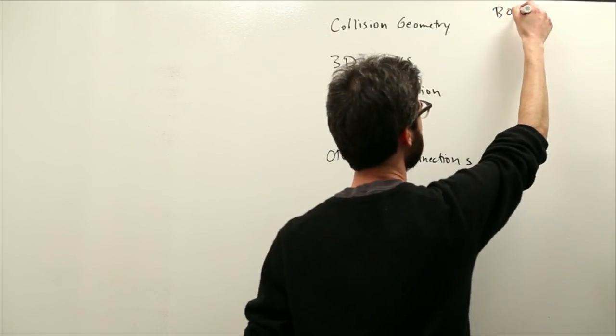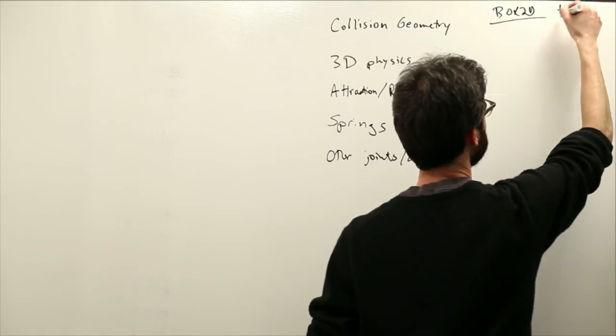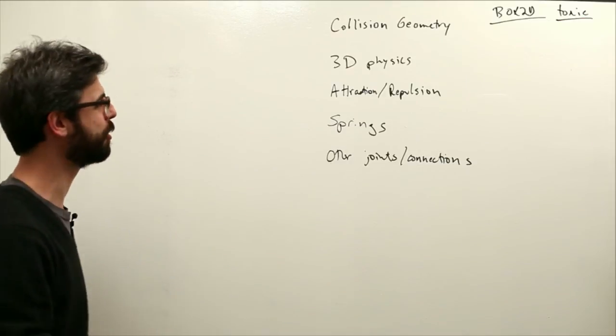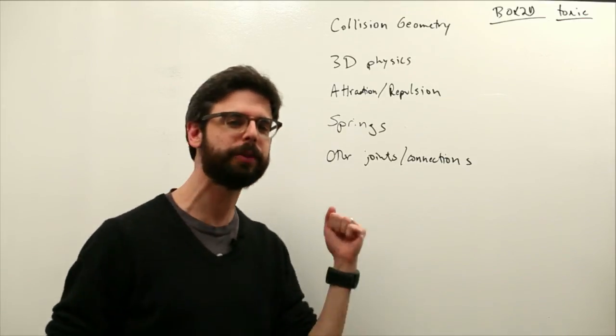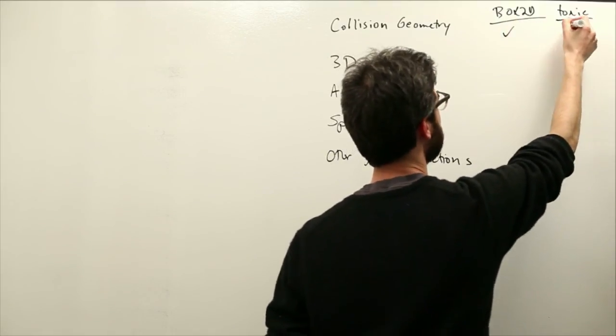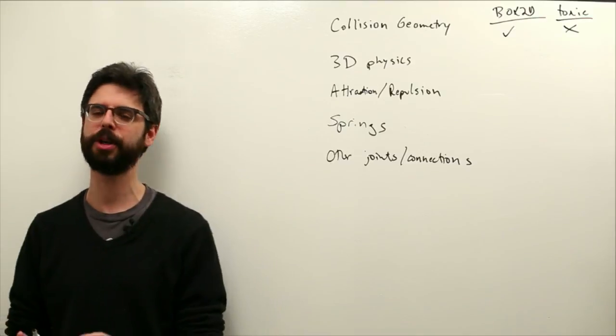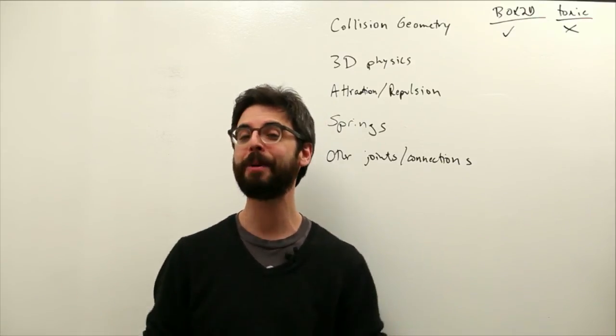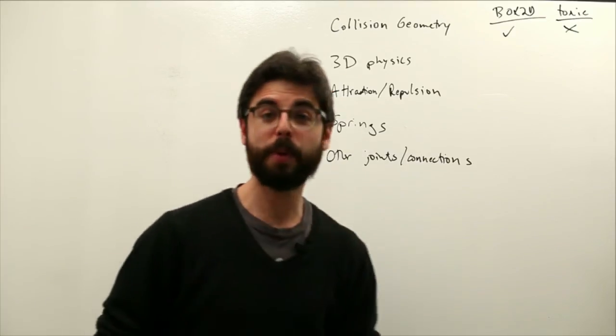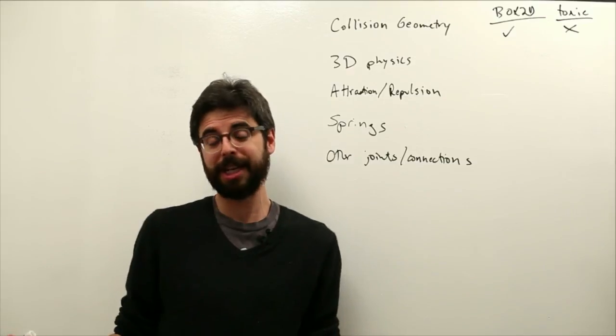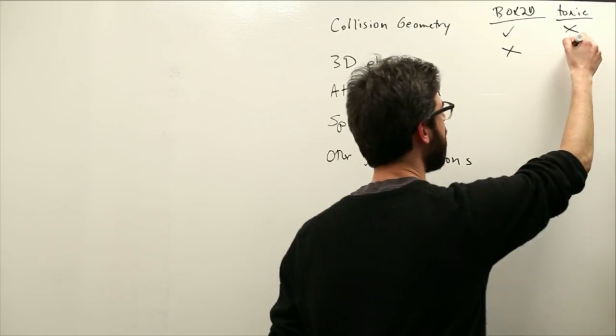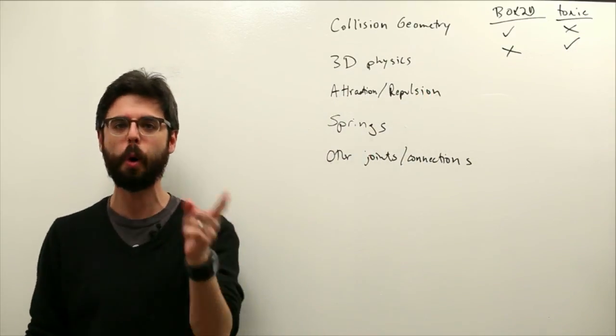Let's make little columns here. This is our Box2D column and this is our Toxic column. And let's put a check mark or an X depending on whether or not the library has that. Box2D, clearly the reason we want Box2D is because it has collision geometry. Check. ToxicLibs does not have collision geometry, although there are some tricky ways around getting the feeling of collisions in a ToxicLibs sketch. Sometimes we might want to generate a sketch that has physics in it that's in 3D. Box2D is only a 2D engine. We cannot do anything in 3D. But ToxicLibs we can do physics in both two dimensions or three dimensions.